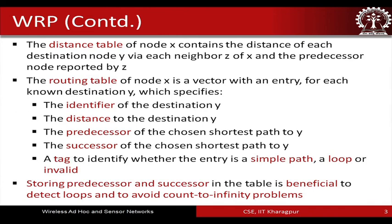The routing table of a node X is a vector with an entry for each known destination Y, which specifies: the identifier of destination Y, the distance to Y, the predecessor of the chosen shortest path to Y, the successor of the chosen shortest path to Y, and a tag to identify whether the entry is a simple path, a loop, or is invalid.